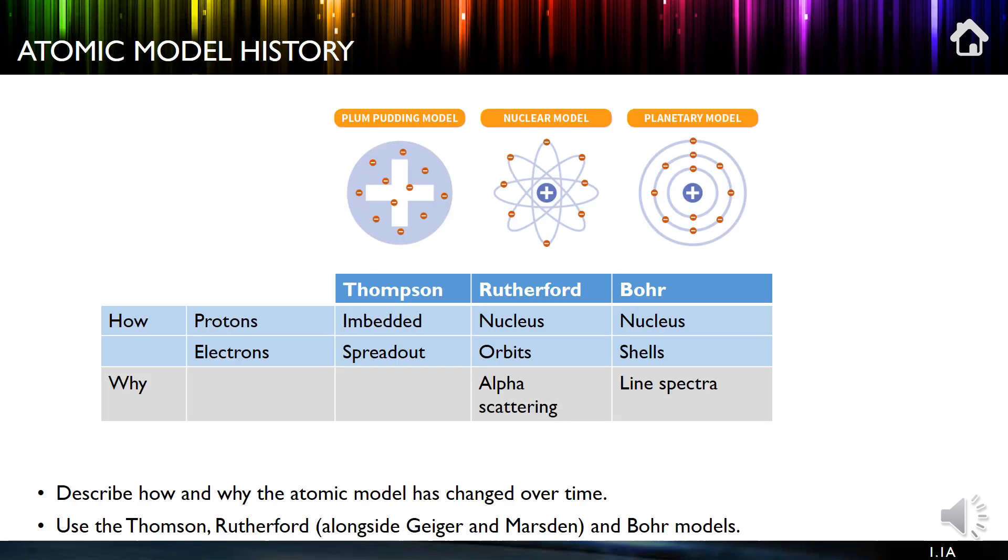Right, let's have a little bit of a think about the history of people's thoughts about particles. Now we start at the beginning of the 20th century. Thomson had this model here called the plum pudding model. He just worked out that electrons existed and he assumed that they were evenly scattered throughout the atom and that the atom was overall positive.